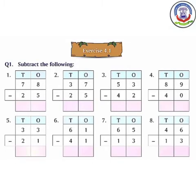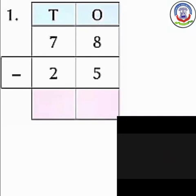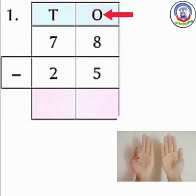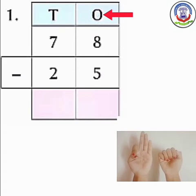Now we will start with our Exercise 4.1. Q1: Subtract the following. Number 1: 78 minus 25. पहले हम ones column में subtract करेंगे. Numbers are 8 and 5. Open 8 fingers and close 5 fingers. How many fingers are left? 1, 2, 3.